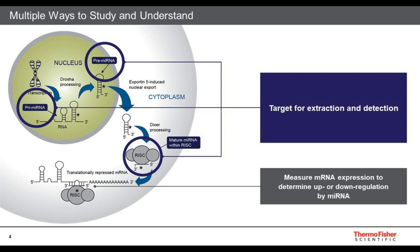There are multiple ways to study the pathway. The prime microRNA, pre-microRNA, and mature microRNA are all targets for both extraction and detection — looking at what is up-regulated or down-regulated in diseased versus normal tissue. In addition, you can also target the end of the pathway and measure messenger RNA expression, seeing if that is up- or down-regulated, and then trace that back to a particular microRNA or set of microRNAs, looking for an impact in human disease and other types of research.